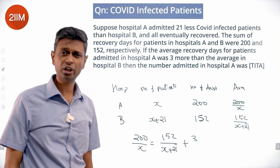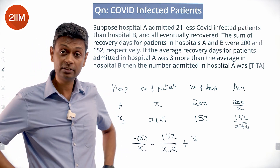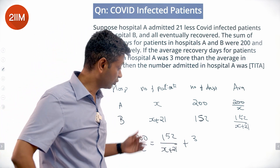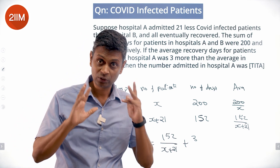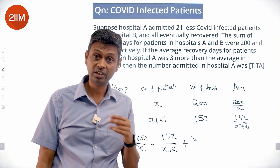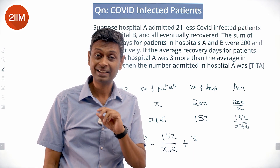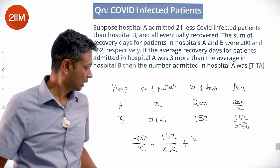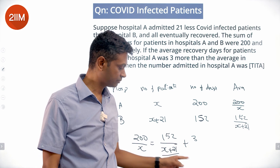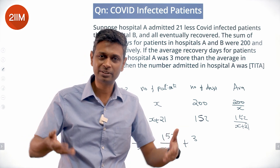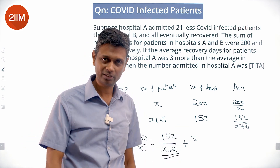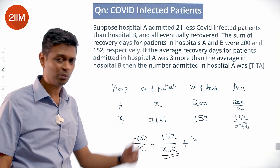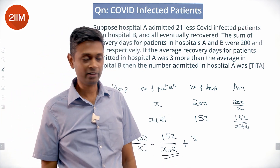We spent an inordinate amount of time trying to crack this by finding factors of 200 and factors of 152 to see where they would fit. 152 factors as 76×2, 38×4, 19×8. So I thought somehow I need a multiple of 19, with only 5 or 6 multiples of 19 that work in this territory — that is, values of x+21. It didn't work. It drove me mad. I didn't want to do it this way.